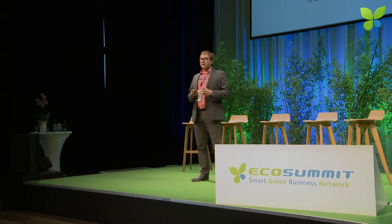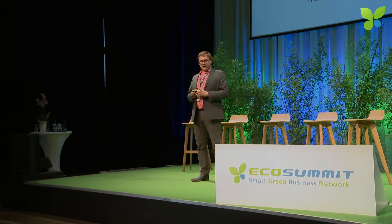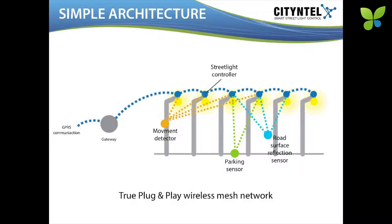And at the same time, a device can fulfill commands from other devices — and not only from one device, but can react differently depending on which device the commands come from. So, basically, the street light can act differently to a command which comes from a movement detector than to a command which comes from a road surface reflection detector.